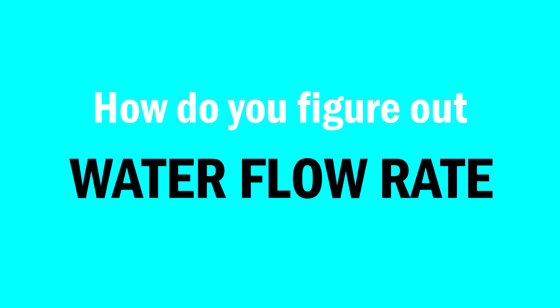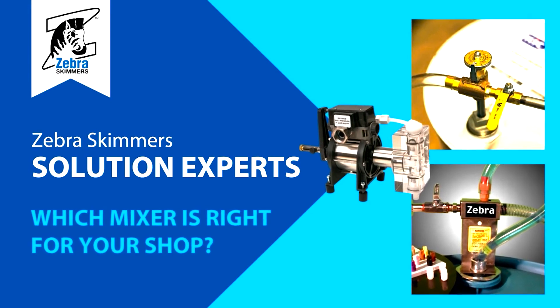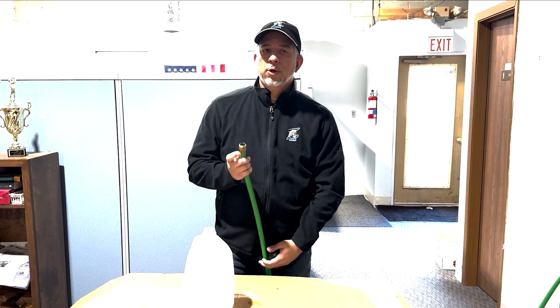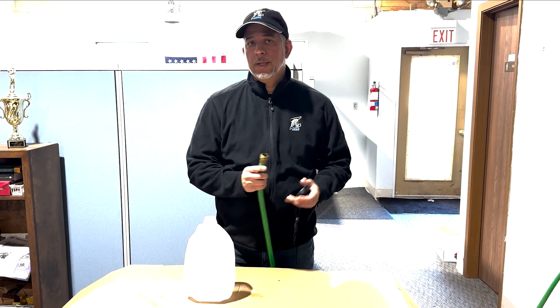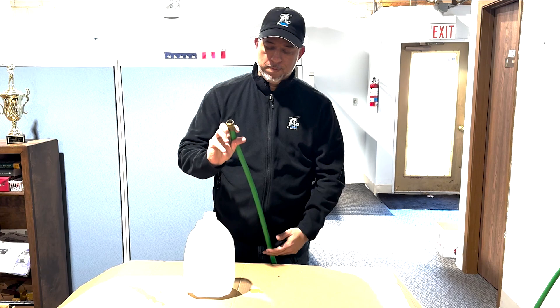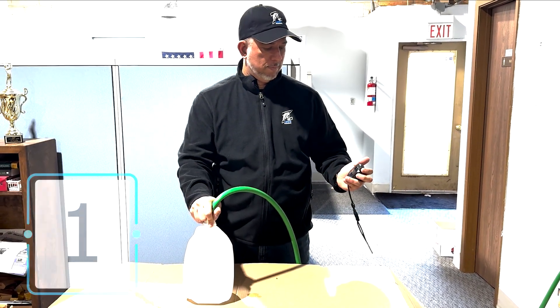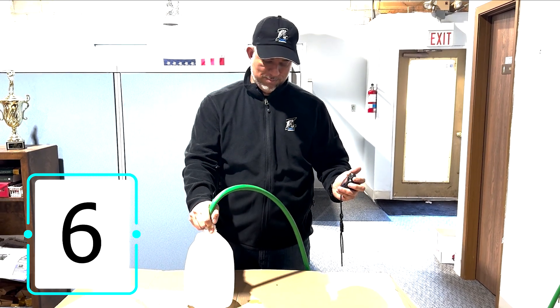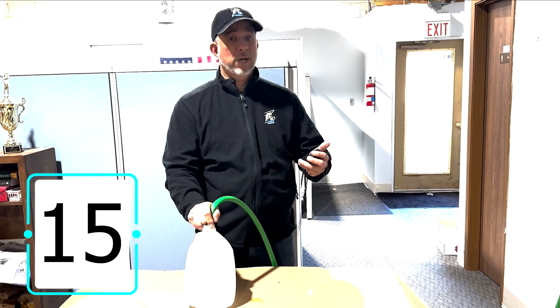How do you figure out what your water flow rate is? Well, check out this video. How do you determine if you need a three gallon or a 10 gallon mixer? We have a simple solution for you. You take a regular hose and a one gallon container and you will fill it and time it. That was 15 seconds.